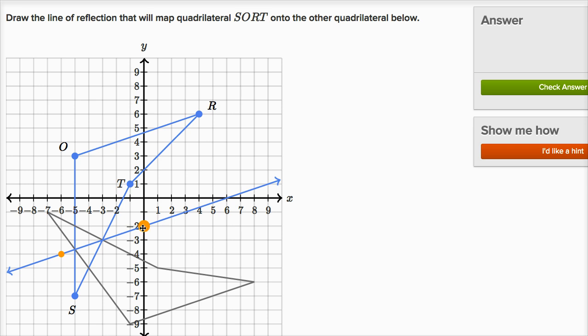This point that I'm highlighting right now in orange is halfway between T and the corresponding point in the image. This point right over here is halfway between S and the corresponding point of the image. You need just two points to define a line. This looks like my line of reflection. Let's see whether I got it right. And I did.